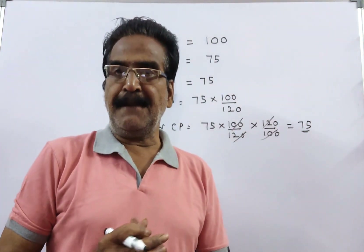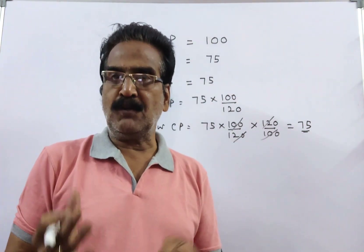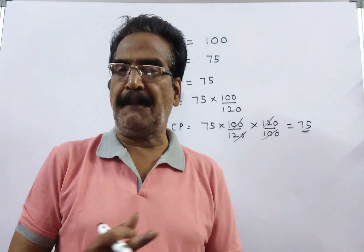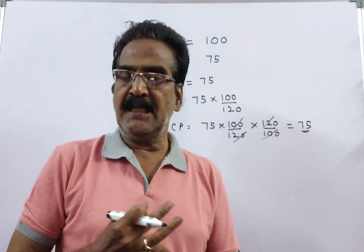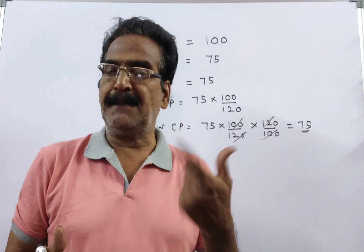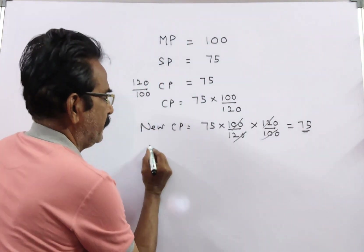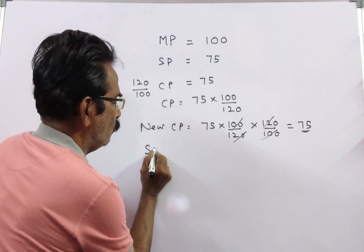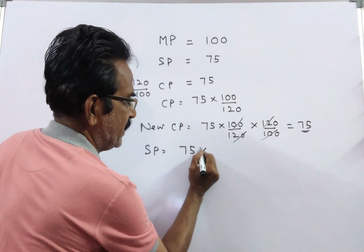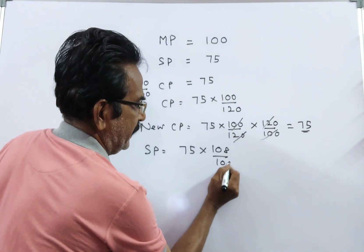Now he is getting a profit of 8%. The question is: what is the discount percent to gain 8% profit? 8% profit means the sold price becomes cost price × 108/100.